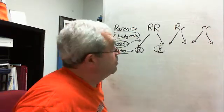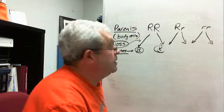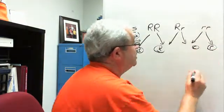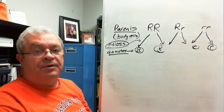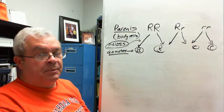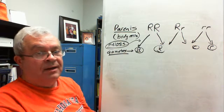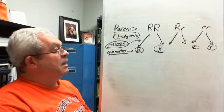All right, what if you're, let's go all the way to the end. Again, if you're a little r, little r parent, kind of the same thing, right? What's going to be in your gametes? If you're a little r, little r parent, you're going to pass on a little r. How many in each gamete? One. One little r in each gamete.